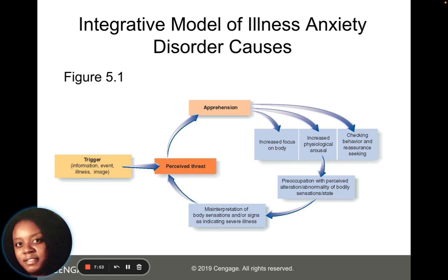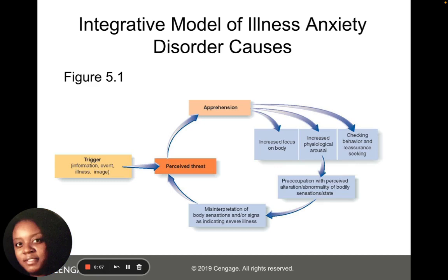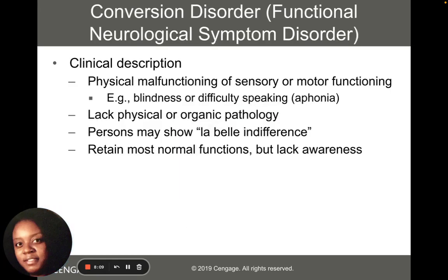Figure 5.1 illustrates the sort of triggering event — what leads to the idea that something is wrong with me, that I have an illness — and how that affects your body and how you respond. Another somatic symptom and related disorder is a conversion disorder, which is sometimes also called functional neurological symptom disorder.